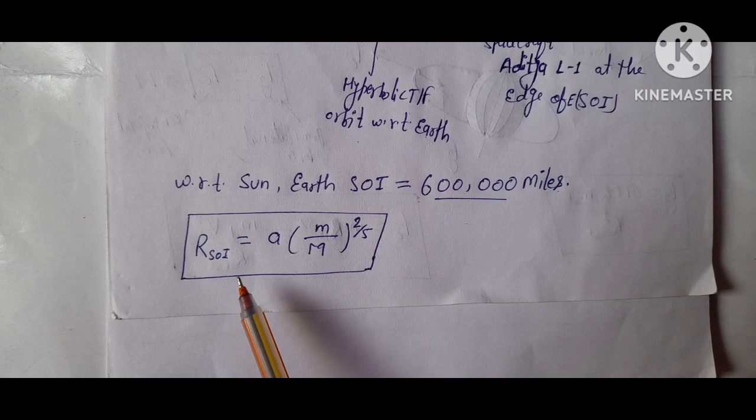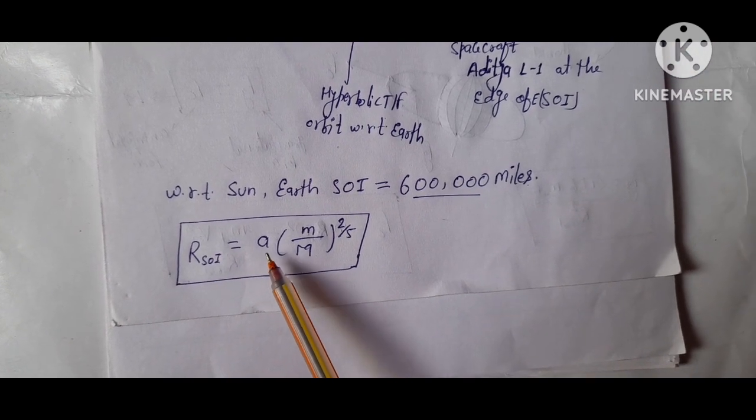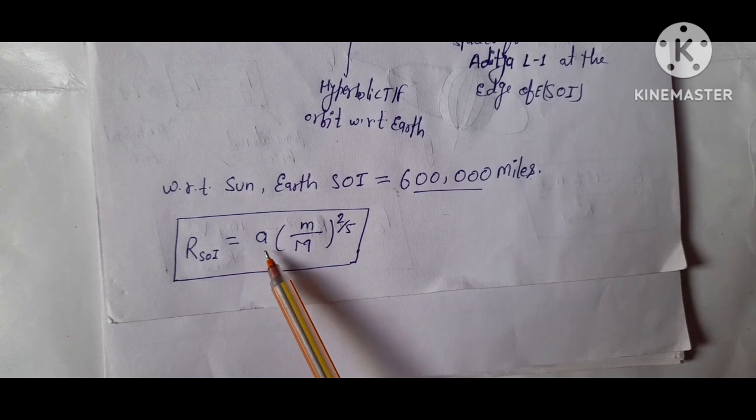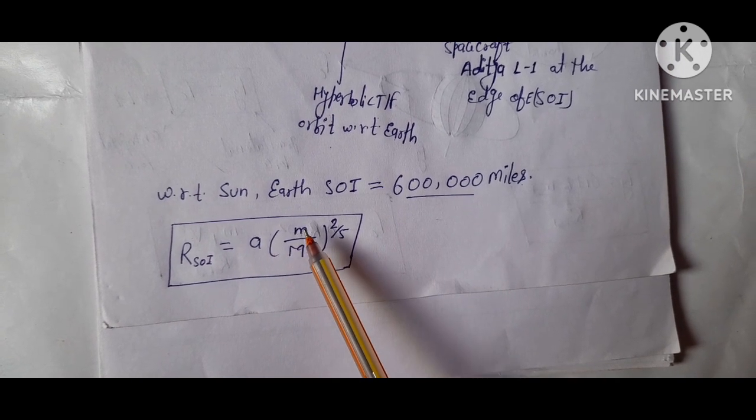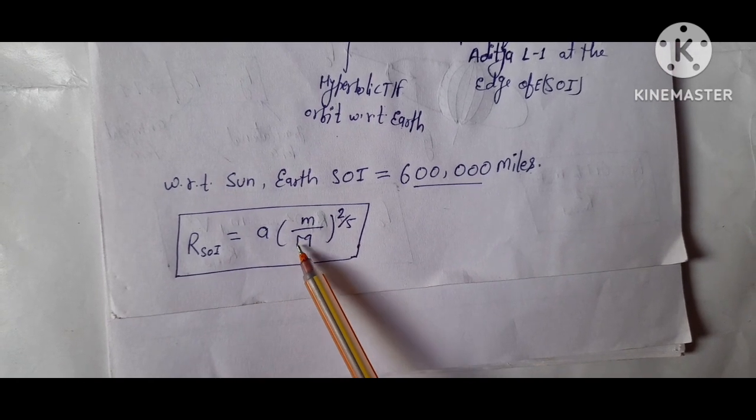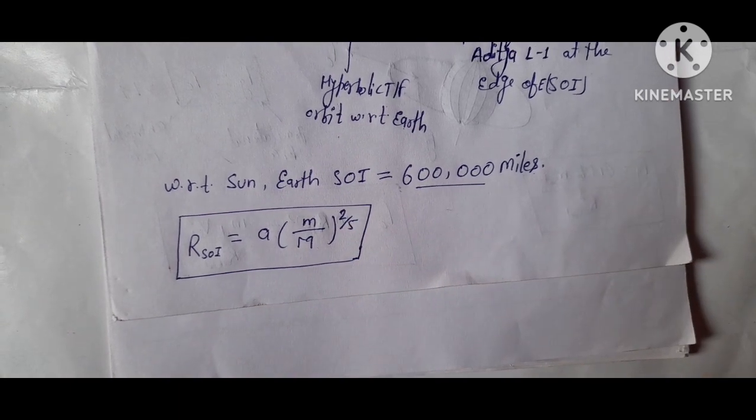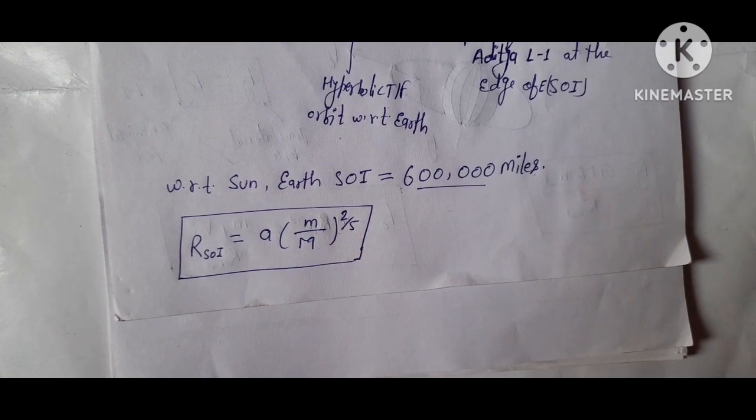In first video, you see the radius of influence equals to semi-major axis A multiply in simple bracket, less massive body, mass of less massive body divided by mass of larger body to the power 2 divided by 5. This is a radius of influence.